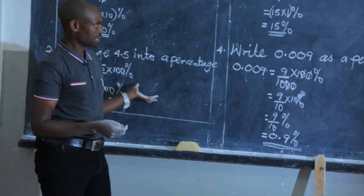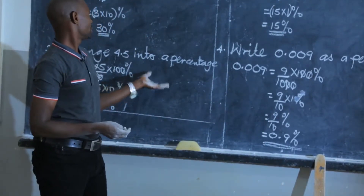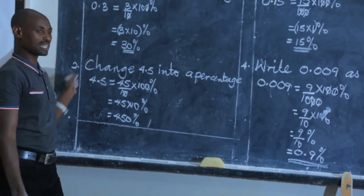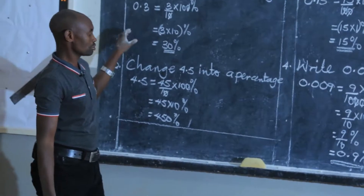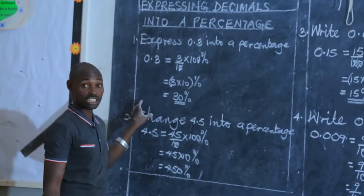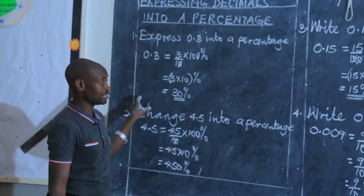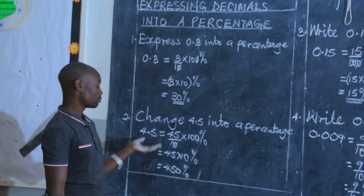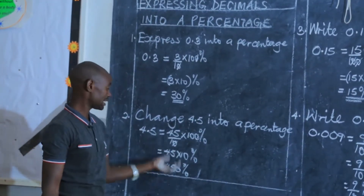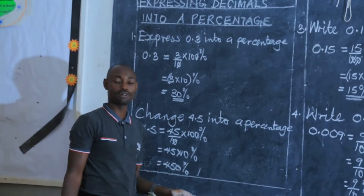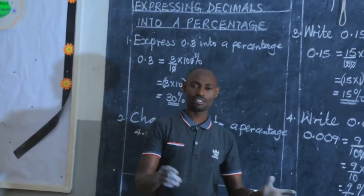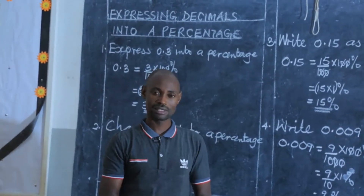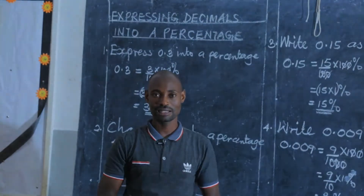I hope you have seen how interesting this lesson has been — very simple. If you are given decimal numbers, the key step is to change those decimal numbers into fractions, then multiply the fraction by 100 — and don't forget the percentage symbol. Thank you so much for being good learners. I'm going to give you an activity. Please enjoy the day, bye-bye.